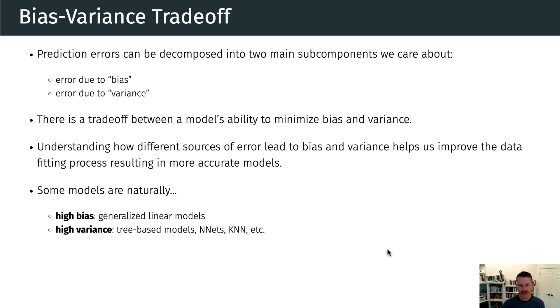Now, there are other models that don't have many assumptions, and they can be very flexible in fitting relationships of our data, whether that be non-linear, non-monotonic. But these models are extremely flexible. These are tree-based models, neural networks, k-nearest neighbor even. And so these models, because of their high flexibility, tend to have high variance.